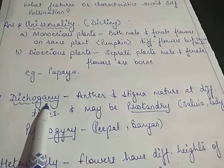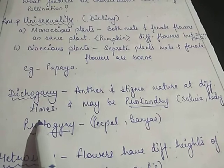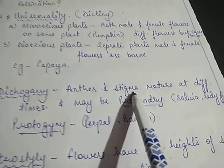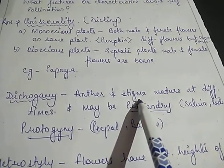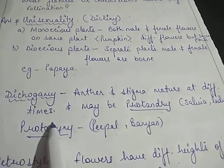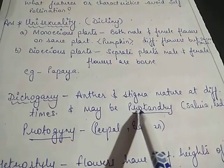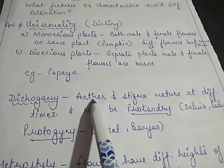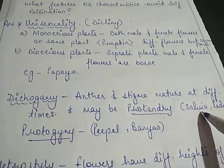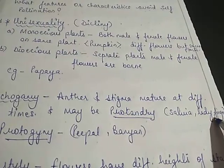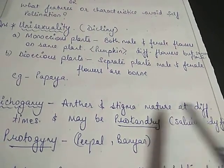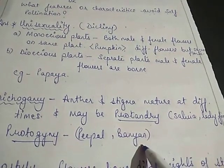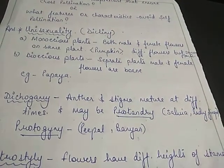The second point is dichogamy — dichogamy means the anther and stigma mature at different times. When anther and stigma have different maturation times, 100% cross-pollination is favored. For example, protandry is when anthers mature first — examples include Salvia and ladyfinger. Protogyny is when stigmas mature first — examples include peepal and banyan.